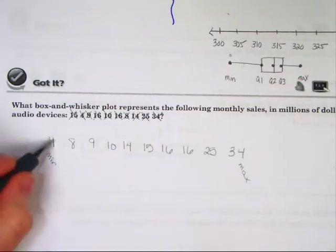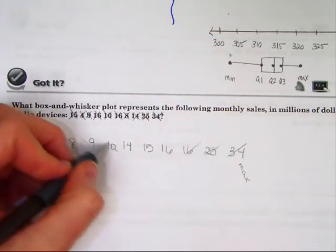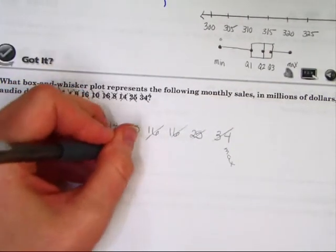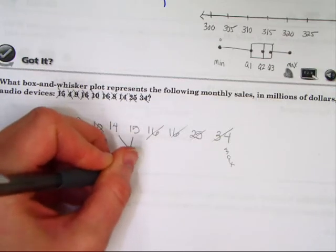Now find the median. Cross off three or so, I'll cross off one. Notice the median happens between 14 and 15, so the median happens at 14 and a half.